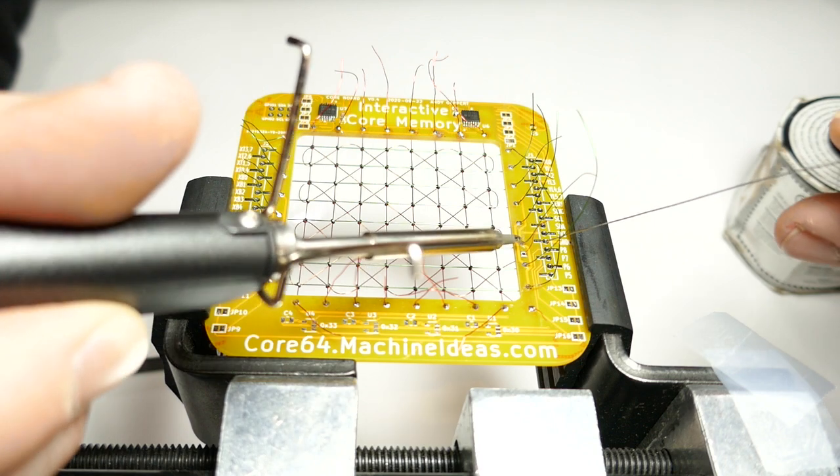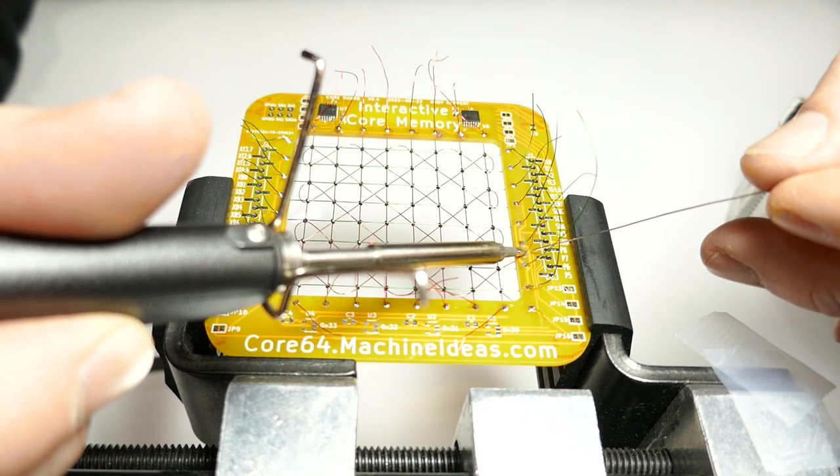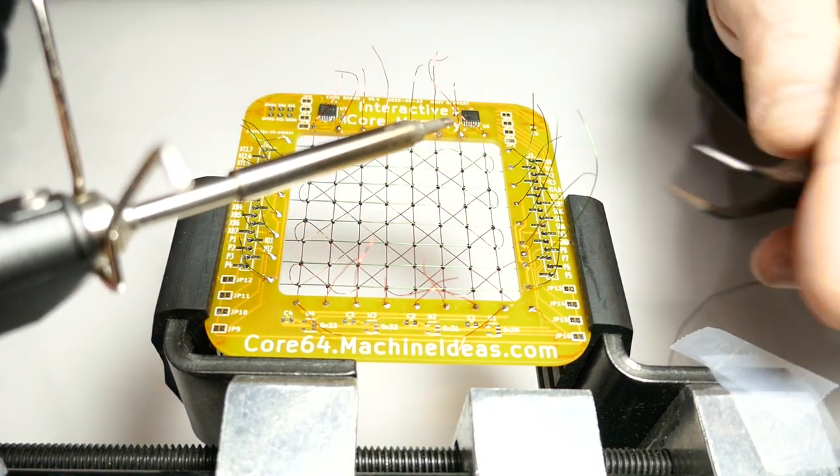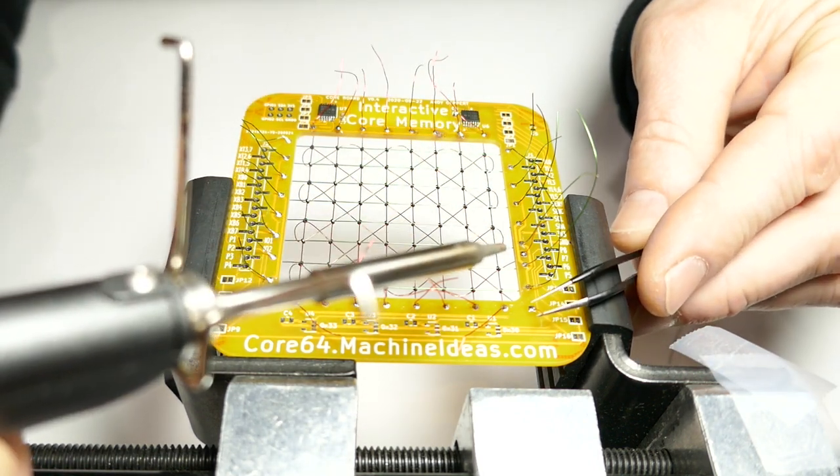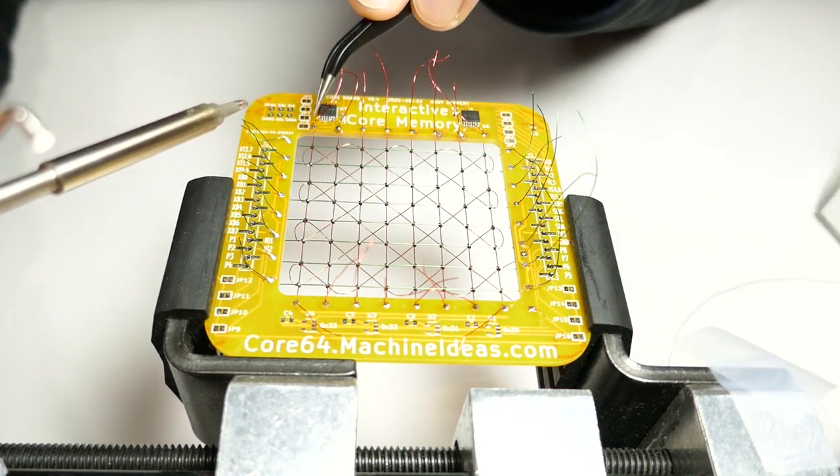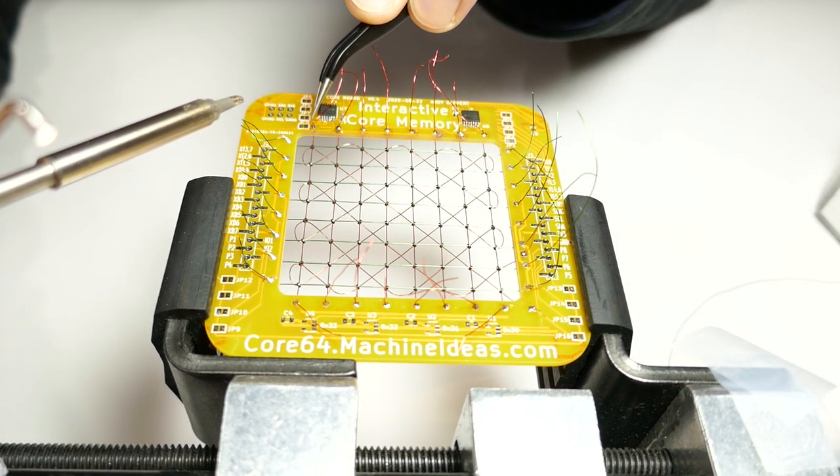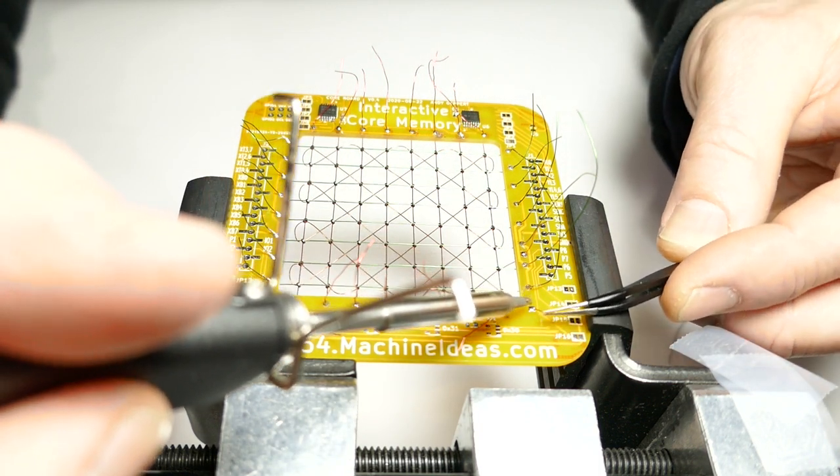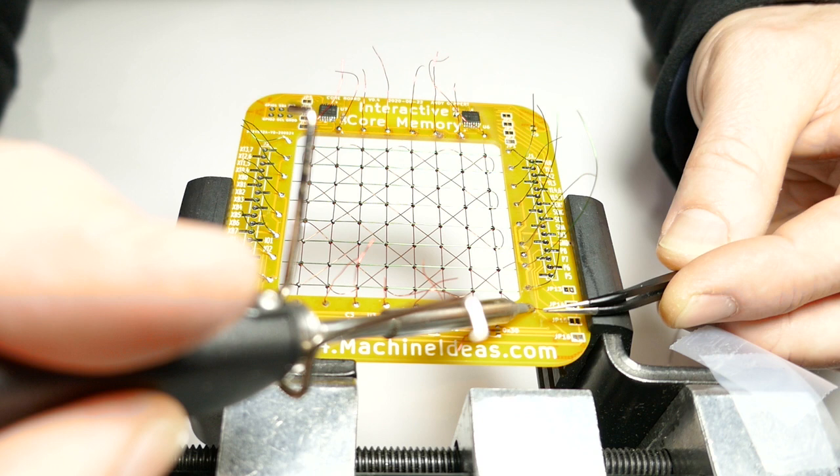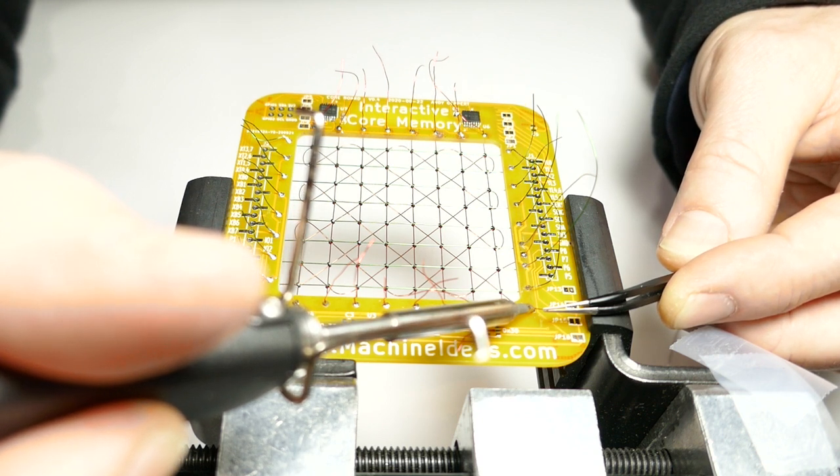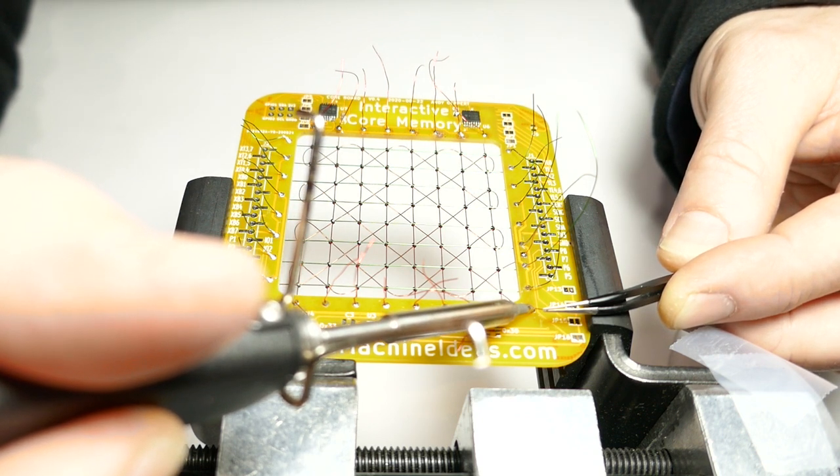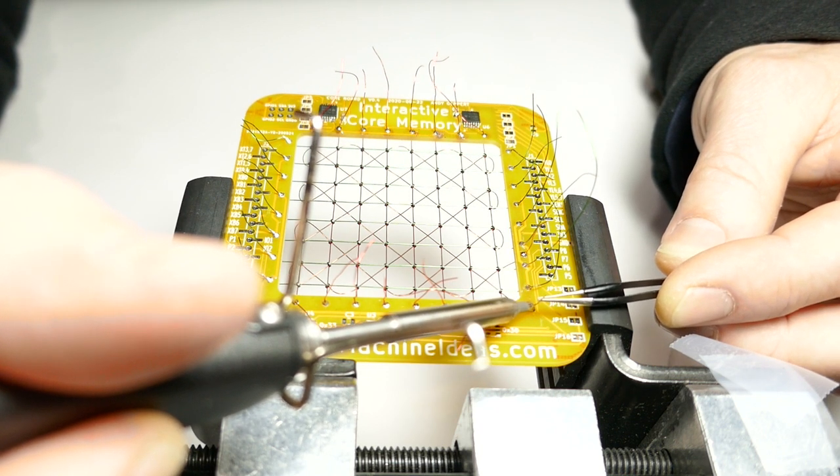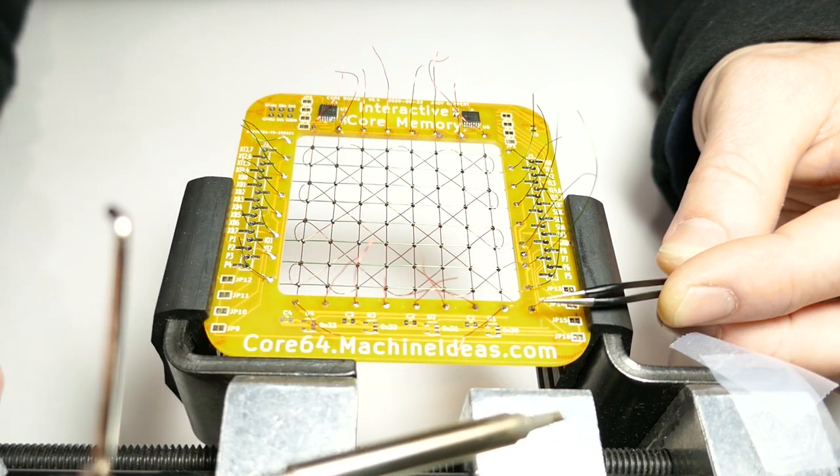So there's our solder at the entry point. I'm not going to pull too hard, otherwise I'm going to pull this core on the opposite corner, but just a tiny bit of tension to make it look nice. Then five or six seconds of heat to make sure that I melt through the enamel, keep the tension on it, pull up with the soldering pencil.